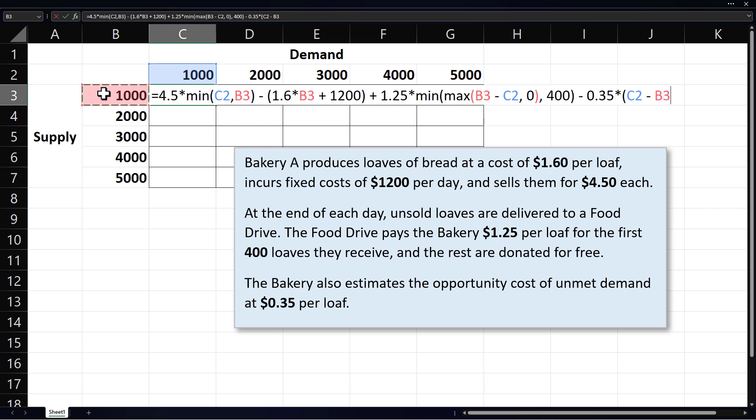But again, this will return negative whenever demand is less than supply. To prevent that, we multiply the 0.35 by the maximum of the shortage and 0.